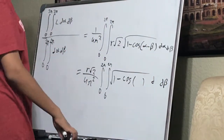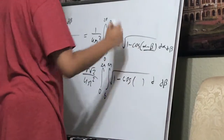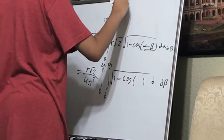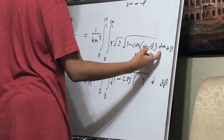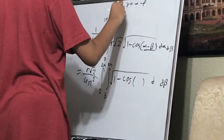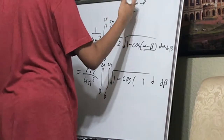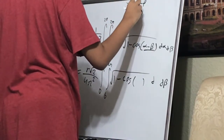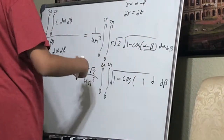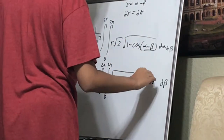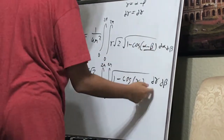I want to do a substitution here. We have alpha minus beta — that's a bit ugly. So let gamma equal alpha minus beta. Because we're integrating with respect to alpha first, d gamma equals d alpha. And just like that we've made the integral way easier to deal with, because now we don't have the minus beta inside the cosine.